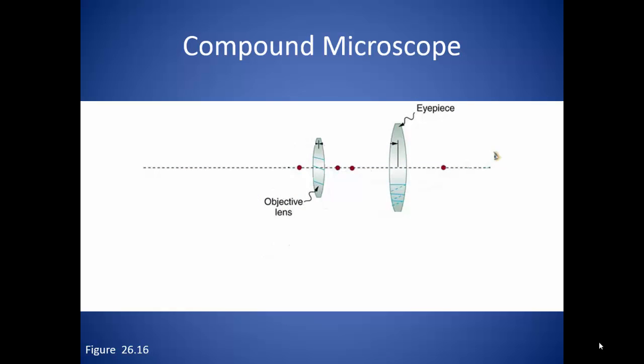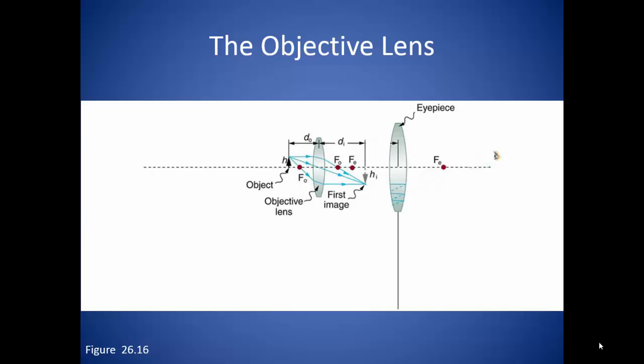Compound microscopes are the simplest type of microscope. These consist of two convex lenses: the objective lens and the eyepiece. An object is placed very close to, but just beyond, the focal point of the objective lens.